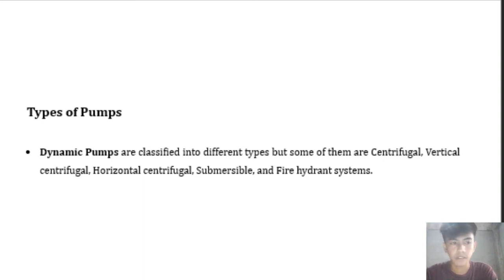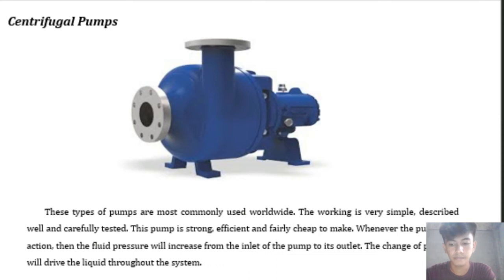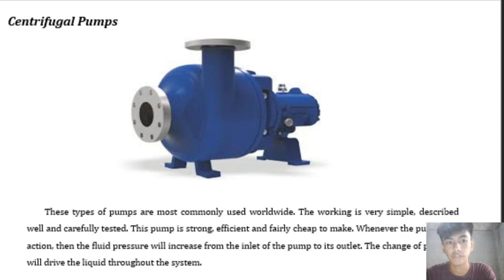The first type of pump is the dynamic pump. Dynamic pumps are classified into different types, including centrifugal, vertical centrifugal, horizontal centrifugal, submersible, and fire hydrant systems. Centrifugal pumps are the most commonly used worldwide; the working principle is simple, well-described, and carefully tested. This pump is strong, efficient, and fairly cheap to make. When the pump is in action, the fluid pressure increases from the inlet to the outlet, and this change in pressure drives the liquid throughout the system.